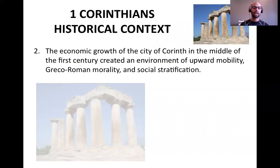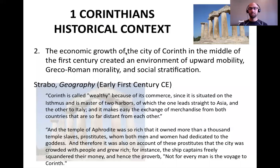The second point of historical context is that the economic growth of Corinth in the middle of the first century created an environment of upward mobility, Greco-Roman morality, and social stratification. This was very strange given that in the ancient world it was rare for people to move up any social ladder — typically the station to which you were born is the station in which you die. There's a first-century author, a contemporary of Paul named Strabo, who visits Corinth and writes about the city for tourists.